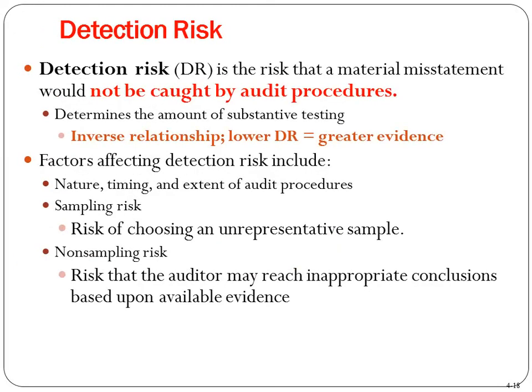Detection risk is the risk that a material misstatement would not be caught by audit procedures — it determines the amount of substantive testing to conduct. It's an inverse relationship: the lower the DR, the more evidence you have to collect. Memorize that inverse relationship. Factors affecting detection risk include the nature, timing, and extent of audit procedures. For example, with the toy company, all production happening at year end makes it harder to detect misstatements during that period.